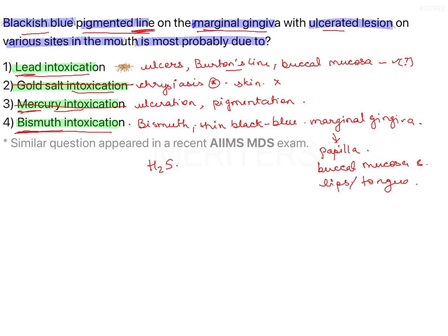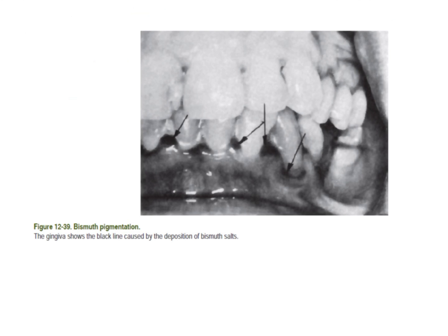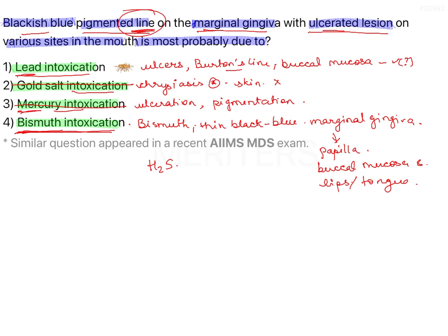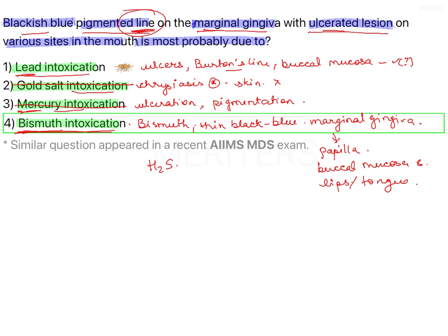Marginal gingiva involvement and ulcerated lesions are seen in both lead and bismuth intoxication, but the line is more particularly specific to bismuth. Clinically, you can see the line on the marginal gingiva extending up to the interdental papilla — this is bismuth pigmentation due to bismuth intoxication. Therefore, the correct answer is option 4: bismuth intoxication.